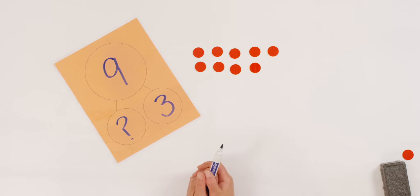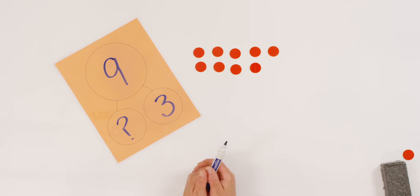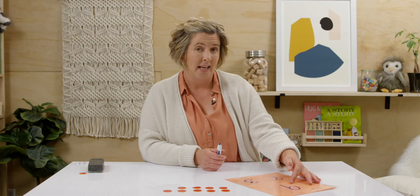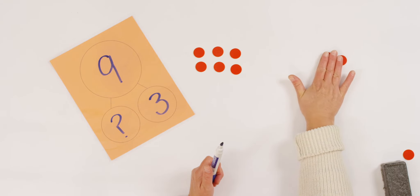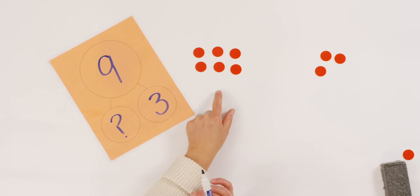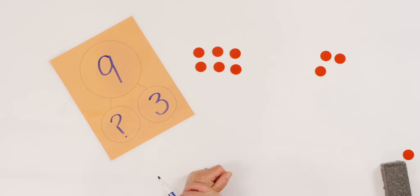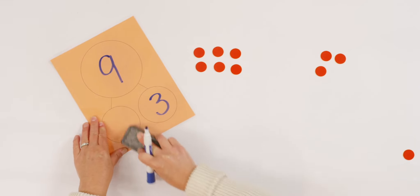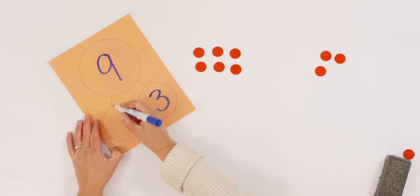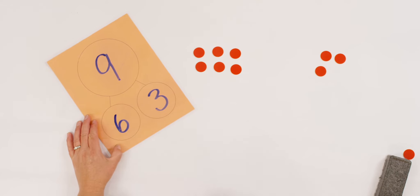Nine. Do you have nine ready? Good, let's continue. I had nine froggies. Three of them jumped in the pond — that's what I know. So how many should I take away? Three. So let's take three away. How many froggies are left? Yes — six. The counters help us solve our problem. So I could take away my question mark and let's write six. Six. We did it.